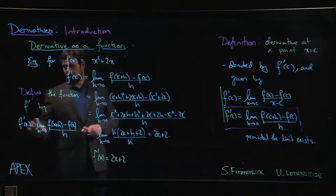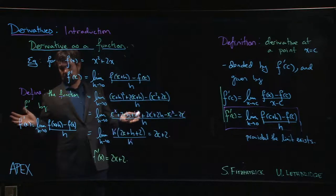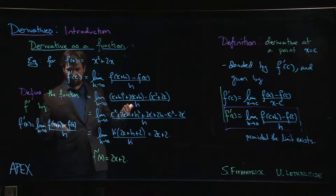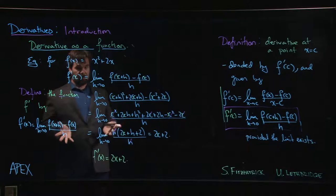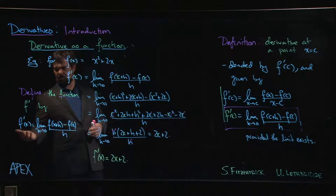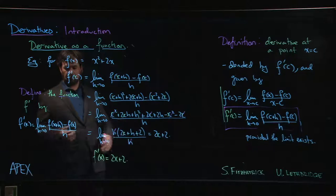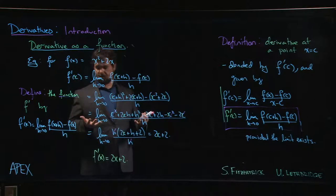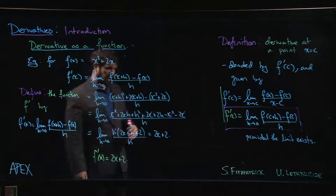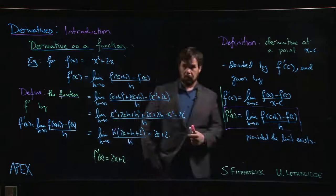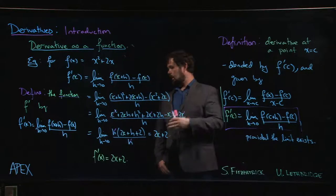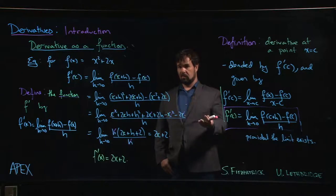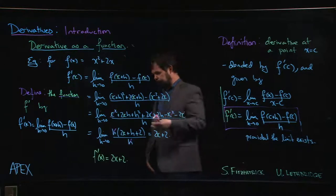So this new function f prime, you'll notice that it's going to have a domain which is at best equal to the domain of the original function. So it's the derivative in the sense that this is a new function that is derived from the old function. f of x has to be defined because it's here in the limit. But not only do we need f of x to be defined, we also need to make sure that this limit exists. And it can happen that there are points in the domain of your original function where that limit doesn't exist, and so the domain for f prime could be smaller.